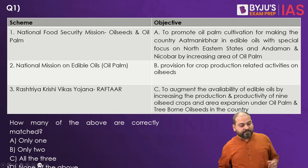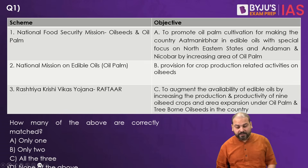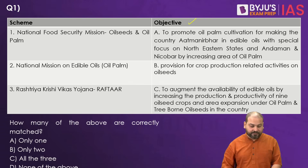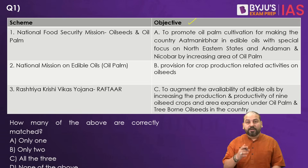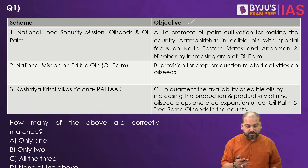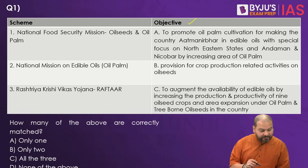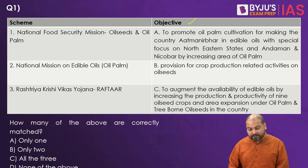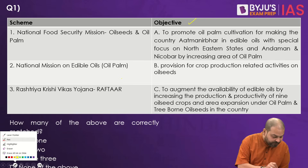The first question — we can see there are three schemes given on the left hand side and their objectives are mentioned on the right hand side. The first scheme is National Food Security Mission Oil Seeds and Oil Palm. The second one is National Mission on Edible Oils Oil Palm. And the third one is Rashtriya Krishi Vikas Yojana Raftar. The objectives are given on the right hand side.